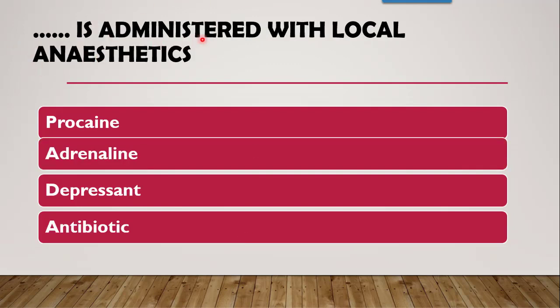Next question: what is administered with local anaesthetics — procaine, adrenaline, a depressant, or an antibiotic? The correct answer is adrenaline. Local anaesthetics have a vasodilator action, whereas adrenaline has the exactly opposite vasoconstrictor action. Due to vasoconstriction, adrenaline decreases blood flow, decreases the rate of absorption of the local anaesthetic, prevents it from spreading fast, and thereby increases the duration of action of the local anaesthetic.